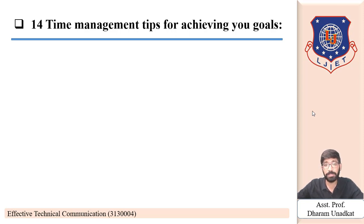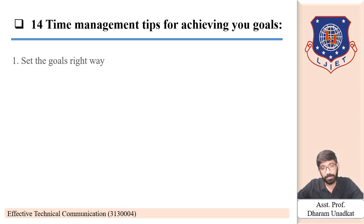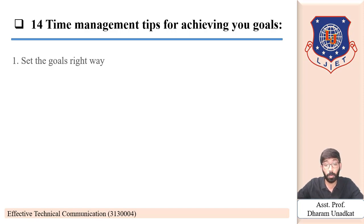In the last video we covered the time management matrix — the four quadrants — which is very important not only in the corporate world but also in professional life. Today let's learn the 14 time management tips for achieving your goals. The first tip is to set goals the right way. If you don't set your goals correctly, you will lack a proper target and fall off track. Use the SMART goal-setting method and ensure you have a deep, meaningful reason for wanting to achieve them.